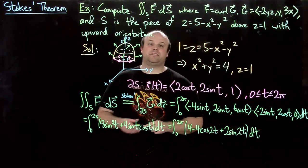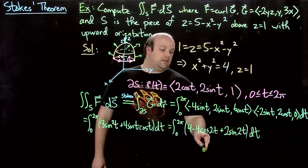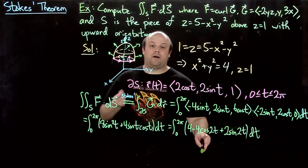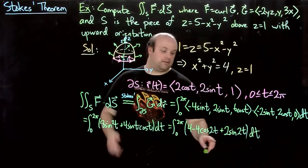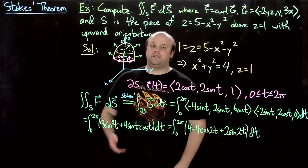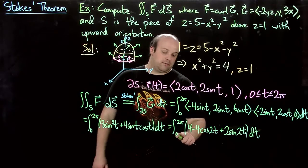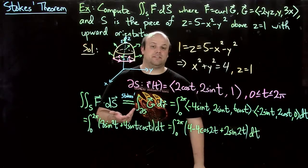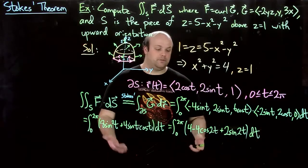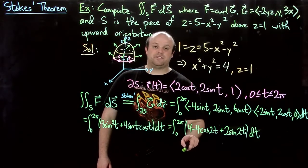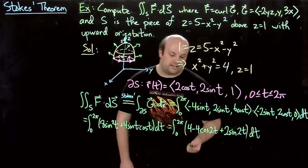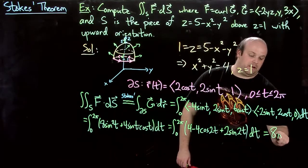So we're integrating from 0 to 2π. We're integrating cosine 2t which has period π. So we're integrating this over two full periods, so that's 0. Same thing here: sine 2t has period π, and we're integrating it over two full periods, so that's again 0. So the only thing we actually have to integrate here from 0 to 2π is 4. And that just gives us 8π.